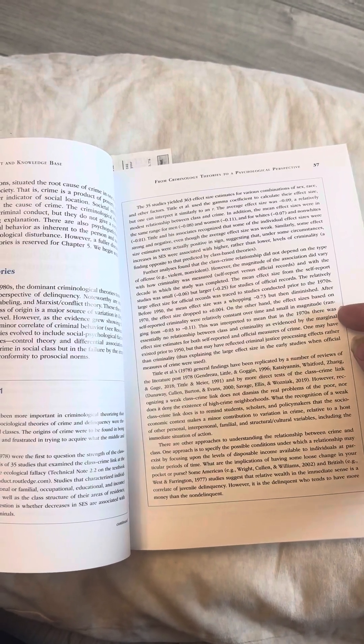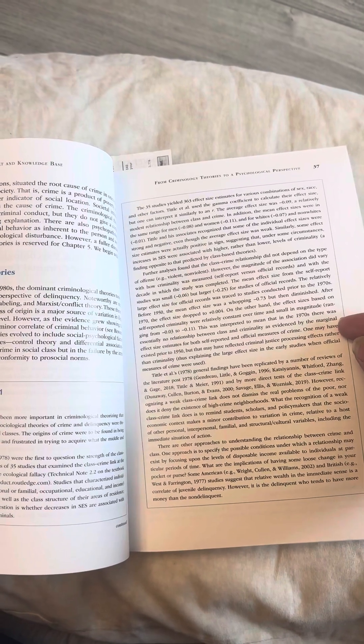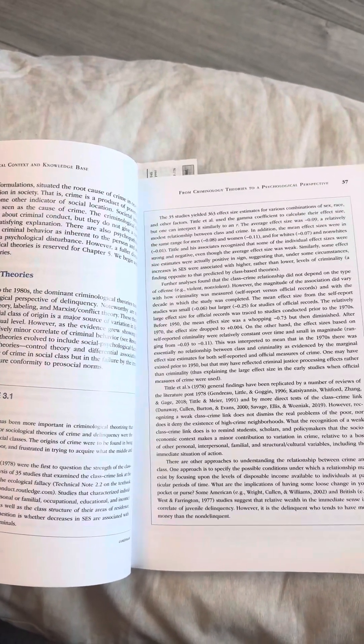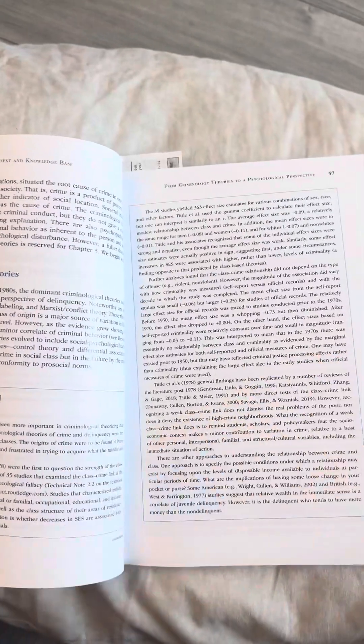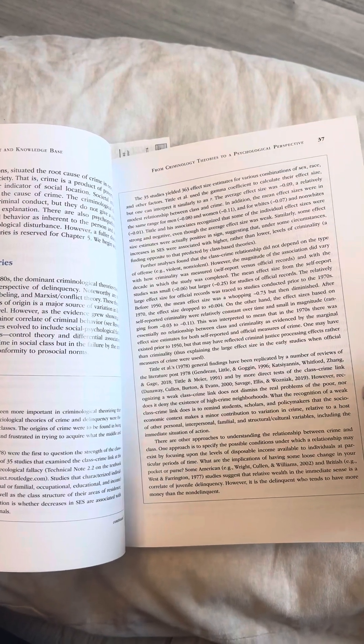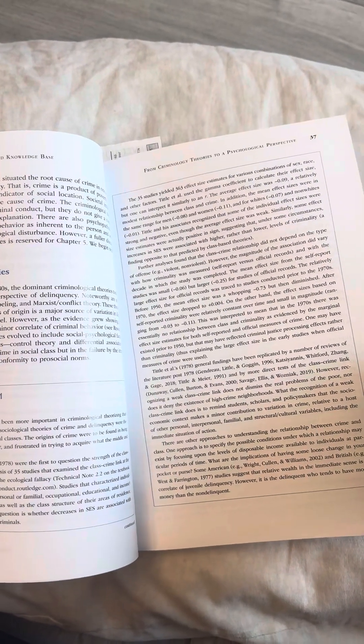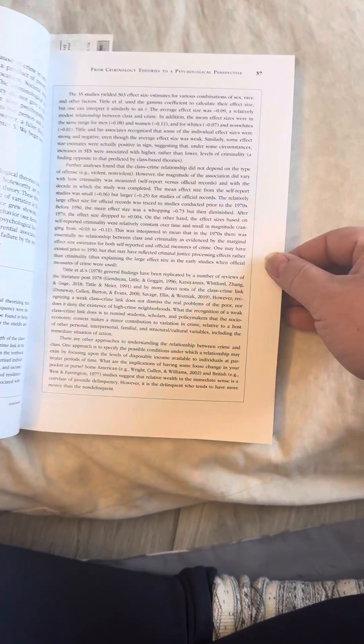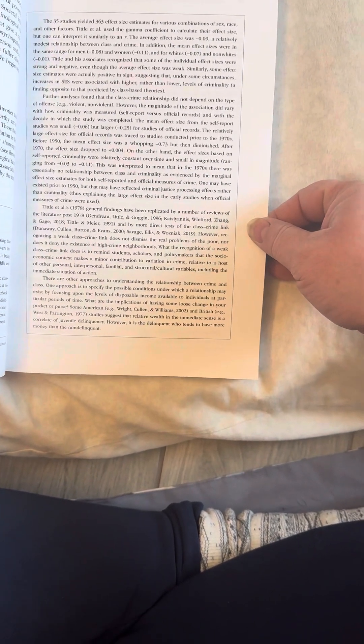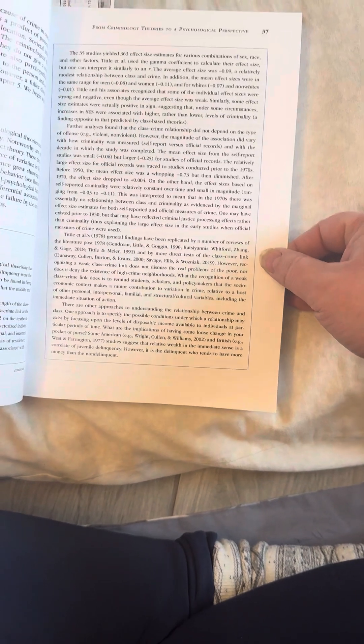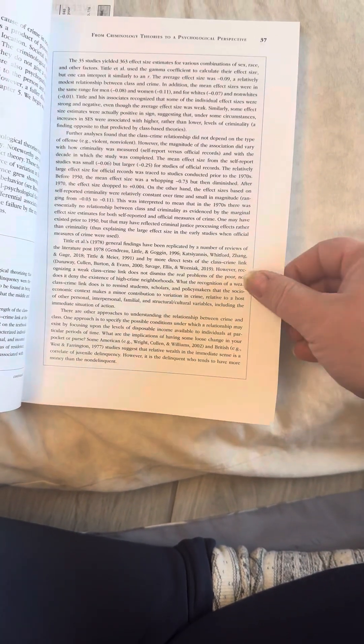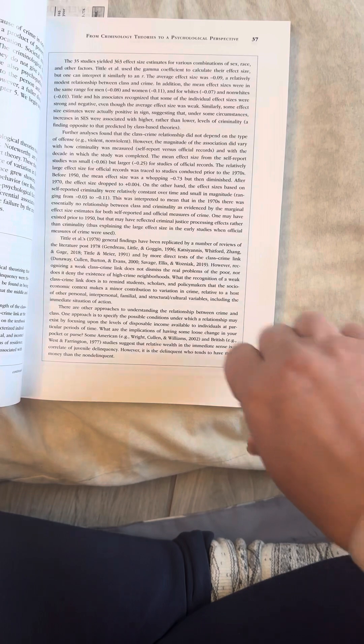On the other hand, the effect sizes based on self-report criminality were relatively constant over time and small in magnitude, ranging from negative 0.03 to negative 0.11. This was interpreted to mean that in the 1970s, there was essentially no relationship between class and criminality, as evidenced by the marginal effect size estimates for both self-reported and official measures of crime. One may have existed prior to 1950, but that may have reflected criminal justice processing effects rather than criminality, thus explaining the large effect size in the early studies when official measures of crime were used.